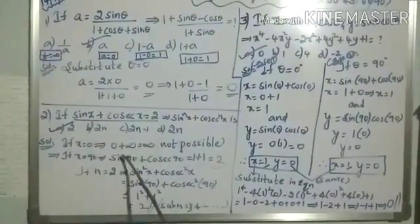Our next problem: (sec a − cos a)² + (cosec a − sin a)² − (cot a − tan a)². See now how to solve this. Same method. If I substitute a = 0 degrees: sec 0 = 1, cos 0 = 1, so (1 − 1)² = 0. But cosec 0 is undefined — infinity. So we are getting undefined values and this is not possible. When a = 0 degrees, we are not getting a valid answer.